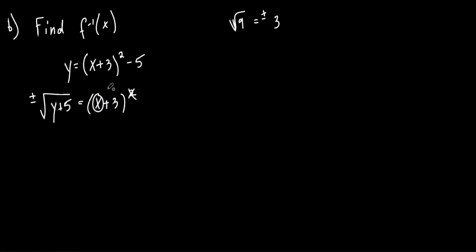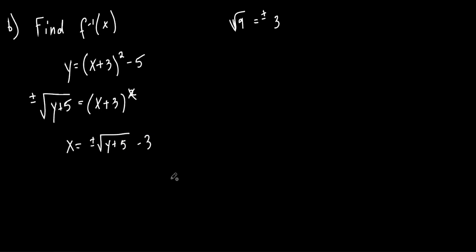One more step to get x by itself — subtract 3. So x equals plus or minus the square root of y plus 5, and then minus 3. Everybody with me? Now what do we do? That's our first step — solve for x. Now just swap the x and the y. So it's going to be y equals plus or minus square root of x plus 5, minus 3. The minus 3 is outside the square root, don't put it inside. That's the answer, that's the inverse of this function.